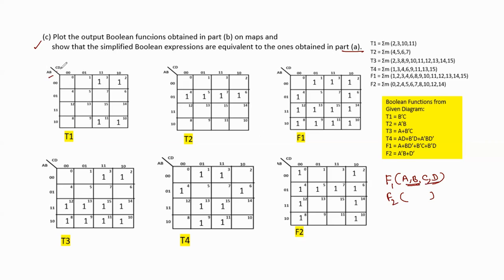For a, b: 2^2 = 4 combinations — 00, 01, 11, 10. Similarly for c, d: 00, 01, 11, 10. Based on these minterm numbers, we fill the K-map cells with 1s, then make groups.